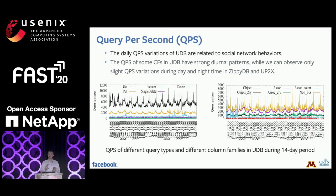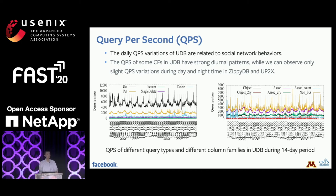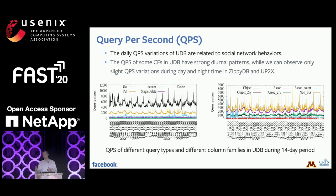Looking at the intensiveness of workloads, in UDB the queries per second varies in a diurnal pattern — closely related to the social graph — with heavy reads and writes during daytime and very light traffic at night. Deletion, iterator, and single delete queries do not show such a pattern because they are triggered by internal Facebook services. For ZPDB and UP2X, which do not directly connect to the social graph, we observe some variation but it's not as clear.